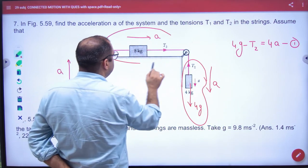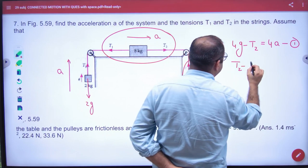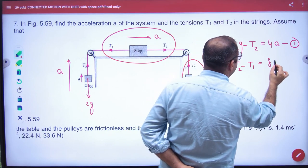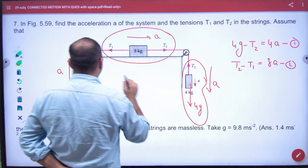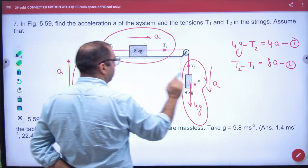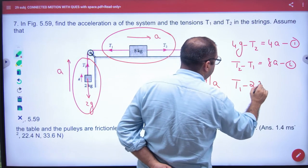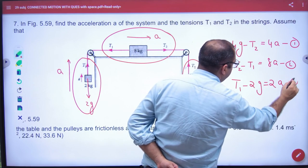Because it is right, so T2 minus T1 is 8 into A. This is your second equation. Because it is going up, so T1 minus 2G is 2 into A. This is the third equation.